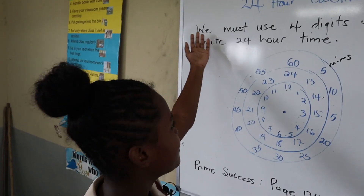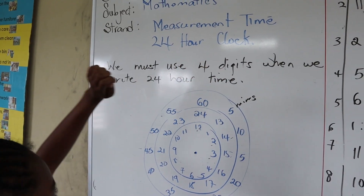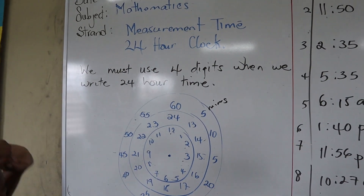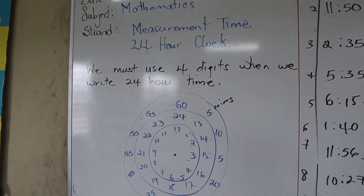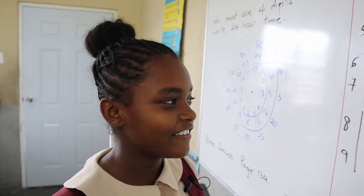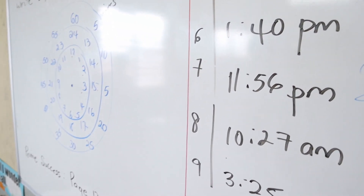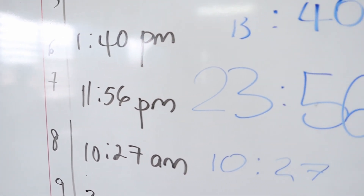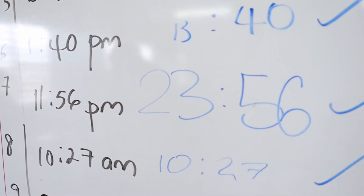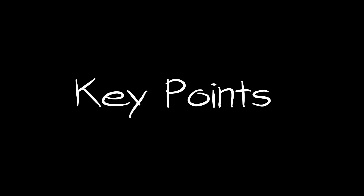We must use a four-digit number when we write 24-hour time. For example, 11:56 p.m. will be written as 2356 hours.